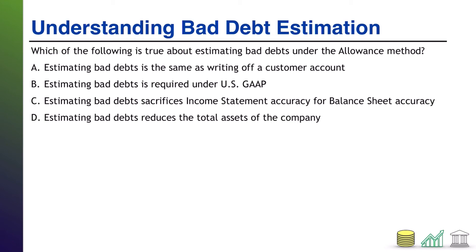How about B: estimating bad debts is required under US GAAP. This relates to the true/false we just did — that is true. Setting up the allowance account is done as part of the bad debt estimation, and the allowance account is required under US GAAP.